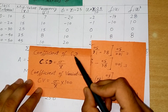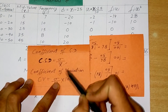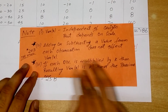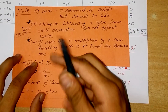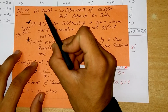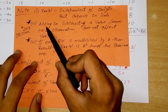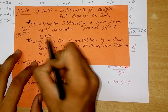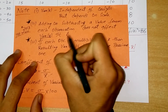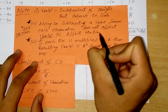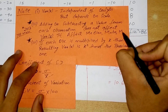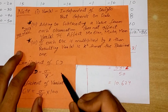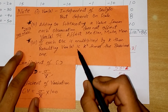The coefficient of standard deviation (CSD) is σ/x̄, and the coefficient of variation is CSD × 100. Important properties: variance is independent of origin but depends on scale. Adding or subtracting a constant from each observation affects the mean, median, and mode, but does NOT affect the variance. This was asked in the 2013 JEE Main paper. If each observation is multiplied by k, the resulting variance becomes k² times the original variance.